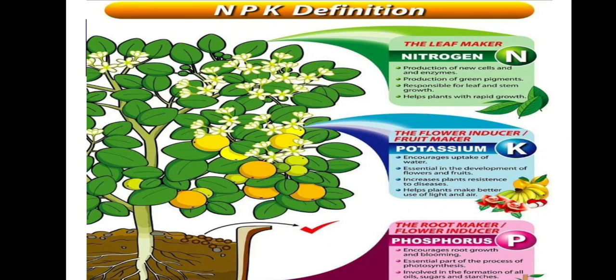Phosphorus is known as the 'root maker' or 'flavor inducer' — it encourages root growth and blossoming, is an essential part of the process of photosynthesis, and is involved in the formation of all oils, sugars, and starches in the plant.